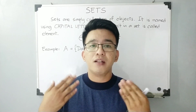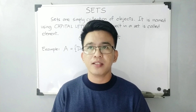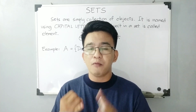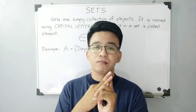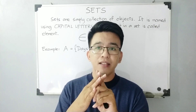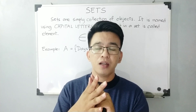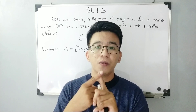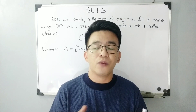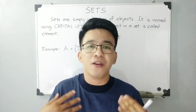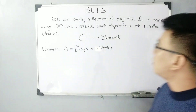Another example: colors of the rainbow. Alam naman natin na meron tayong colors of the rainbow, which is red, orange, yellow, green, blue, indigo, and violet. Yung seven colors na yun, sila yung set natin, which is yung set natin ay yung colors of the rainbow.